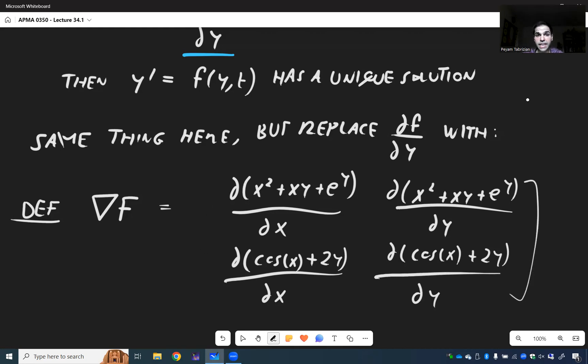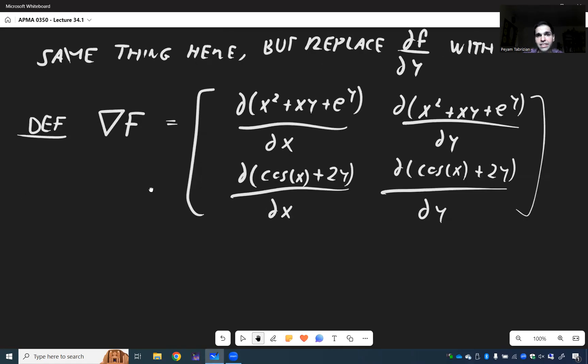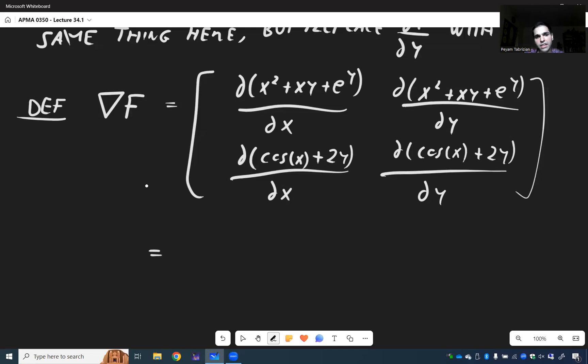Which looks scary, but in this case simplifies tremendously because we end up getting that the gradient here is 2x plus y, then x plus e to the y, then minus sine of x, and then 2.